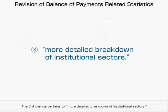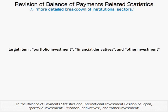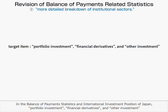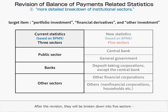The third change pertains to a More Detailed Breakdown of Institutional Sectors. In the Balance of Payments Statistics and International Investment Position of Japan, Portfolio Investment, Financial Derivatives, and Other Investment are currently broken down into three sectors: the Public Sector, Banks, and Other Sectors.